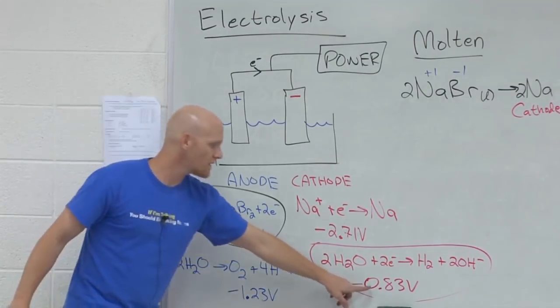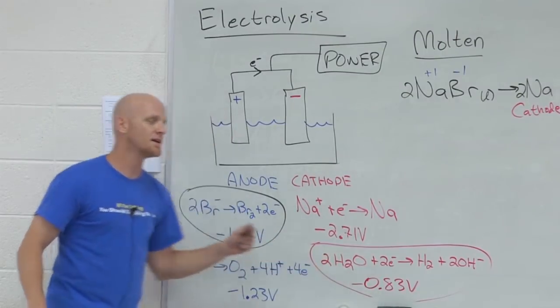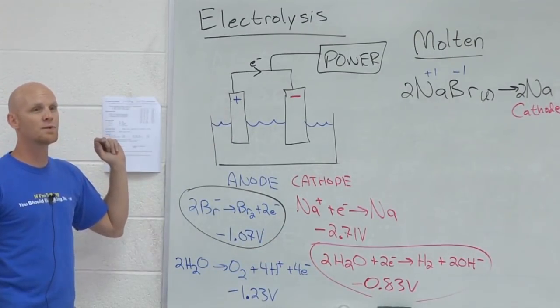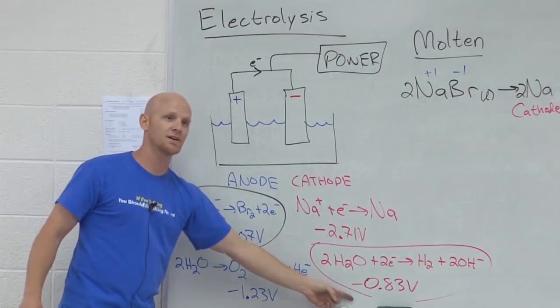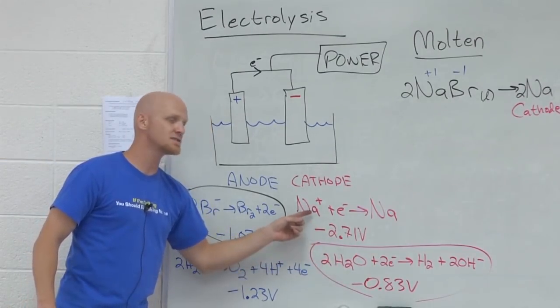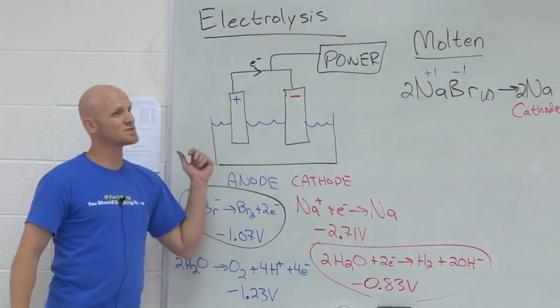So why can't aluminum? Well, if you notice, when water gets reduced, it's negative 0.83. When aluminum ions get reduced, it's negative 1.66. Water is just easier. Just like water is easier to reduce than sodium ions, water is easier to reduce than aluminum ions, too.